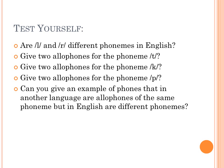Here are a few exercises to test yourself — you might want to pause and write down your answers. Are L and R different phonemes in English, and think about why they are or aren't. Give two allophones for the phoneme T. Give two allophones for the phoneme C. Give two allophones for the phoneme P. Can you give an example of phones that in another language are allophones of the same phoneme, but in English are different phonemes?